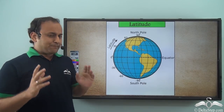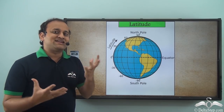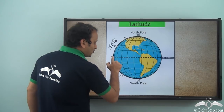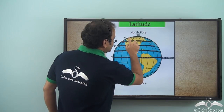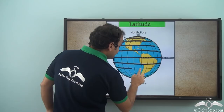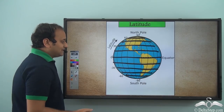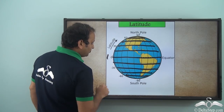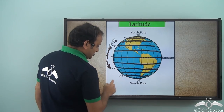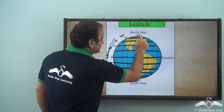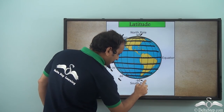Apart from these two important lines, there are more lines drawn on the entire earth. Taking the equator as the base, we have some lines drawn parallel to the equator. These lines are called latitudes. They are numbered with the equator as zero, and as you move towards the poles the number keeps increasing — 30 degrees, 60 degrees, 90 degrees. Similarly, going south you have minus 30, minus 60, and minus 90.